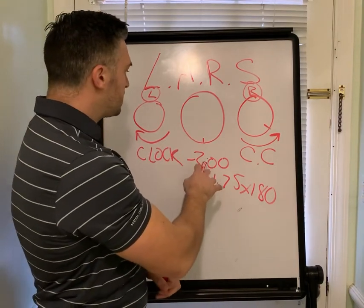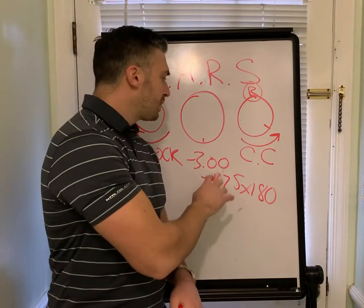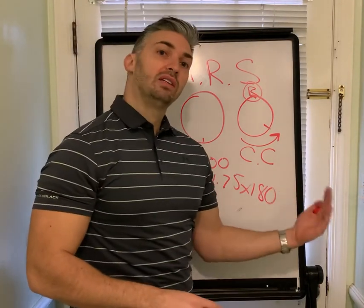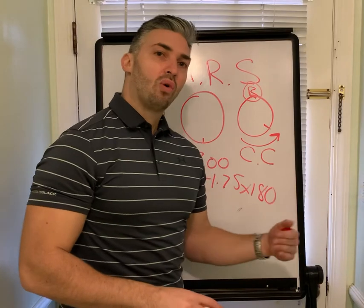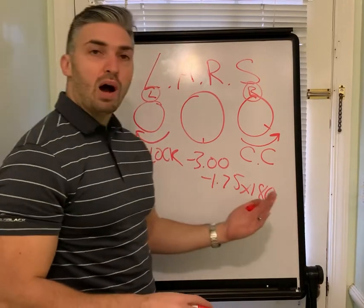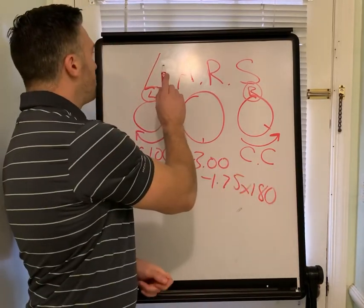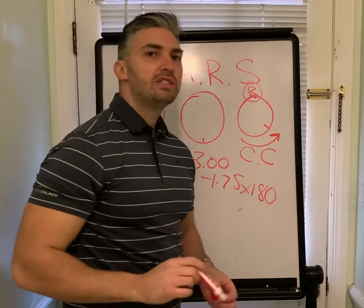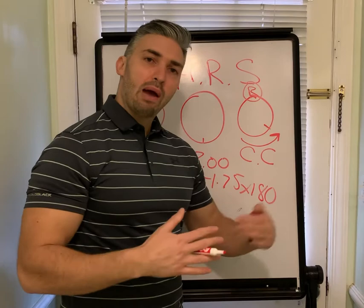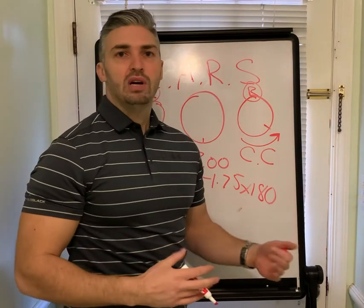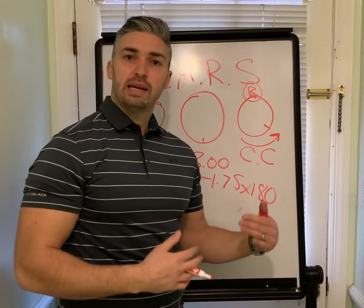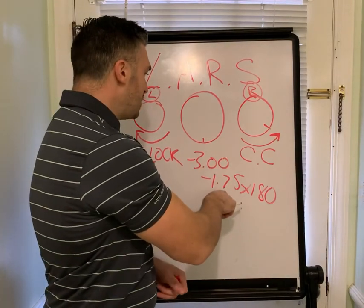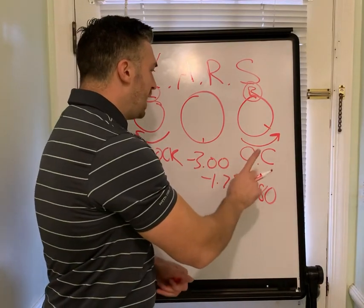So if it said that this lens — negative three, minus 1.75 at 180 — rotated 30 degrees to the left, or 30 degrees clockwise, you would use your acronym and remember left add. If we add 30 degrees to 180, we have to treat 180 as zero, so the new axis would actually be axis 30. You would prescribe negative three, negative 1.75, and axis 30.